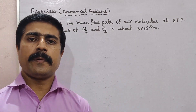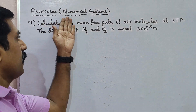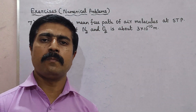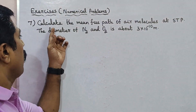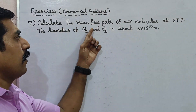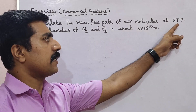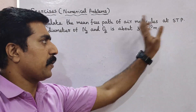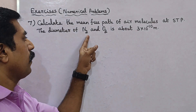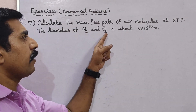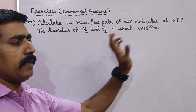Hi students, now we have a very simple problem. Exercises are numerical problems from the book. In this problem we will calculate the mean free path of air molecules at STP — standard temperature and pressure. The diameter of N2 and O2 (nitrogen and oxygen) is about 3 × 10⁻¹⁰ meter.